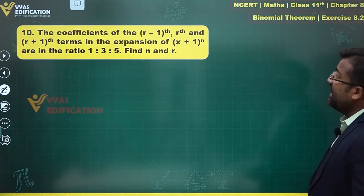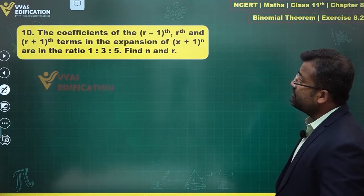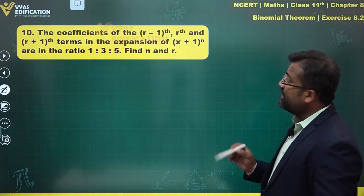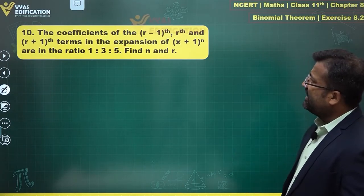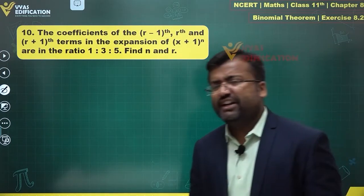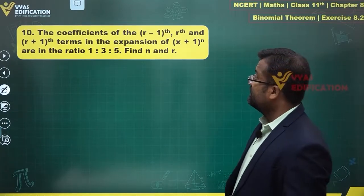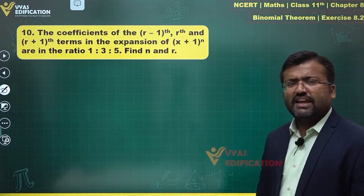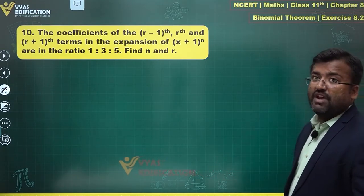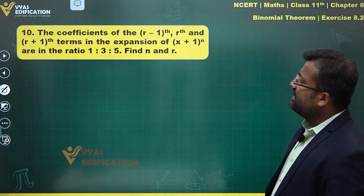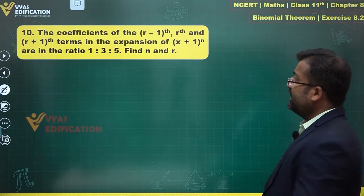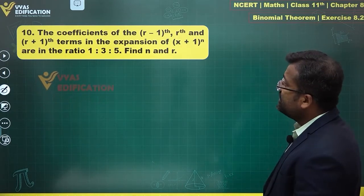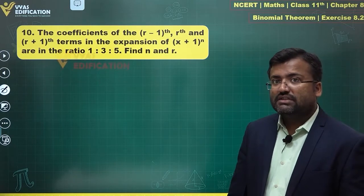The question says: the coefficients of the (r-1)th, rth, and (r+1)th terms in the expansion of (x+1)^n are in the ratio 1:3:5 — find n and r. This is a very interesting question that has been asked repeatedly in board examinations and JEE Main. JEE Advanced used to ask such questions and may ask again in more complicated forms.